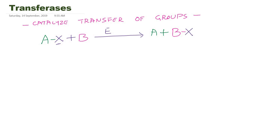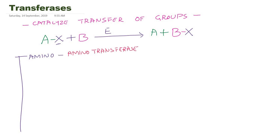This is an overview of reactions catalyzed by Transferases. When we say specific groups, these groups could be an amino group or nitrogen-containing group. Such enzymes — the subclassification of Transferases — which can transfer an amino group from one molecule to another are called Aminotransferases. They are also commonly known as transaminases.